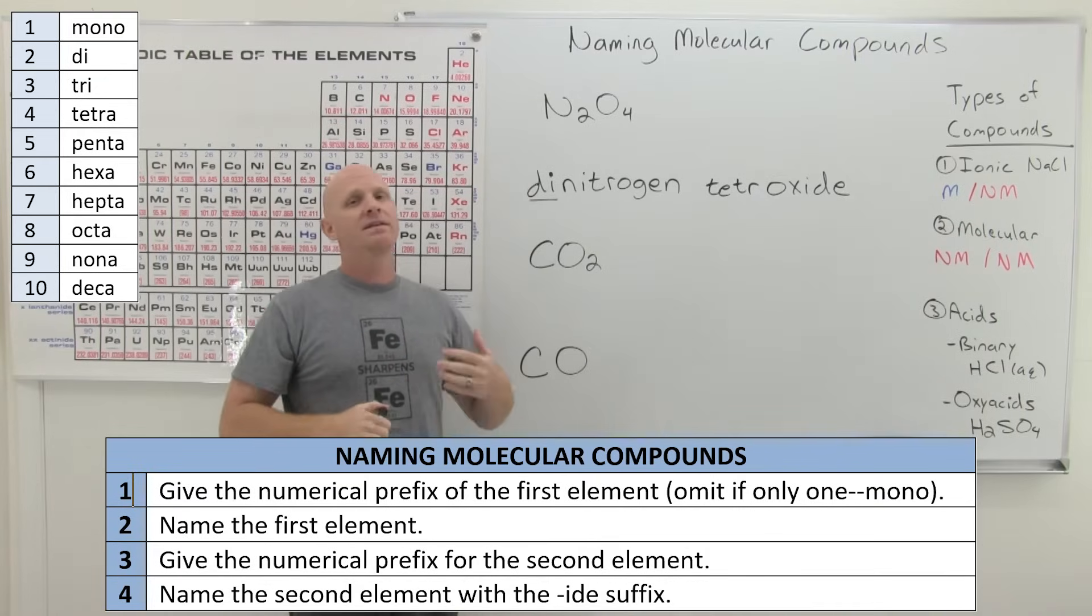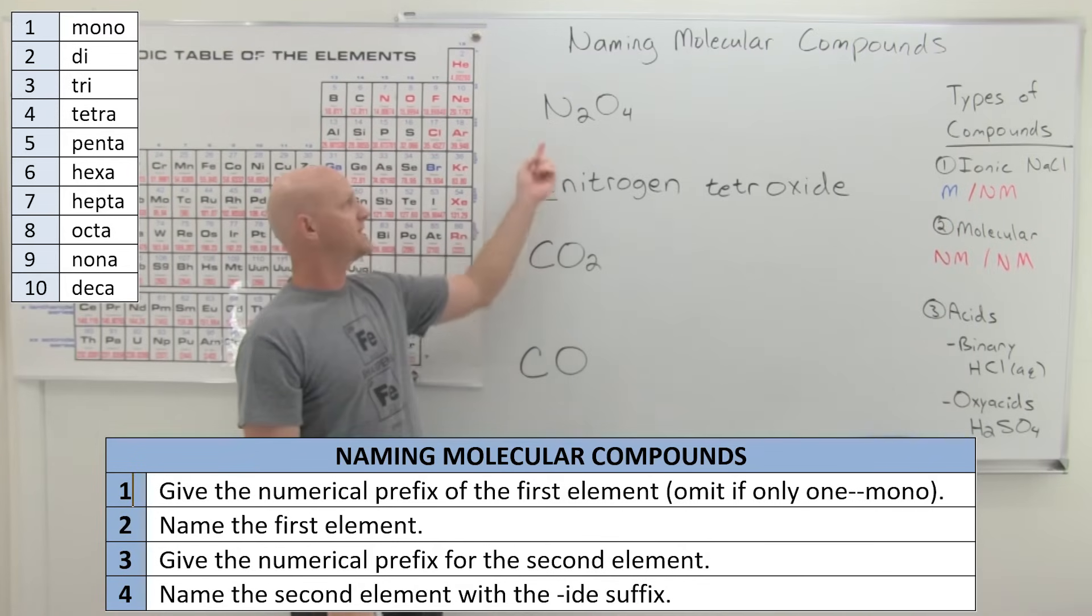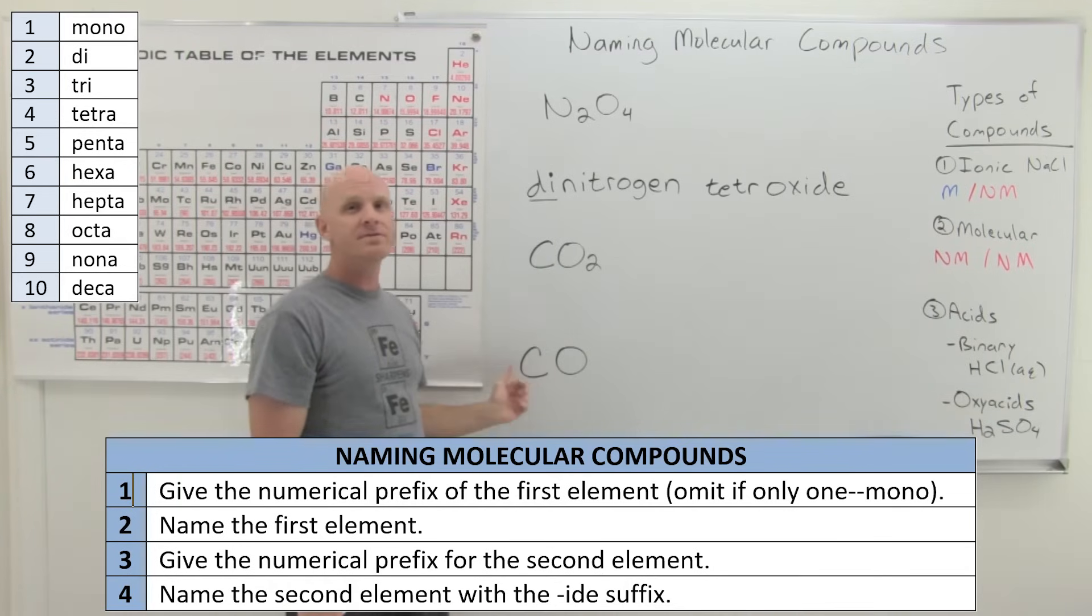All right, so it turns out that the vast majority of molecular compounds have only one of the first elements. Like N2O4 is not the most common thing in the world, but it had two of the first element. But the vast majority have only one of the first element.